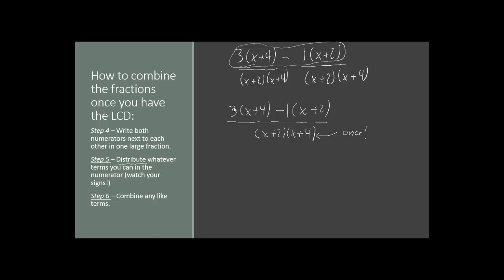We'll get 3 times the quantity (x plus 4) minus 1 times the quantity (x plus 2), divided by the LCD: (x plus 2) times (x plus 4). Our next step is to distribute the 3 across the first parentheses and the negative 1 across the second parentheses. We get 3x plus 12, then negative 1 times x is negative x, and negative 1 times positive 2 is negative 2 — all still over the LCD: (x plus 2) times (x plus 4).